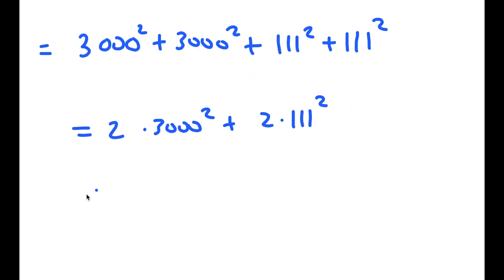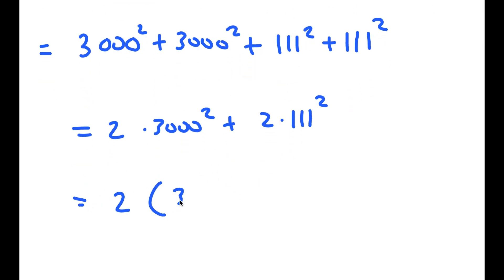So now if I factor out 2, I get 2 times 3,000 squared plus 111 squared.